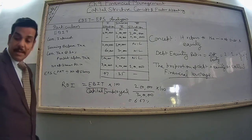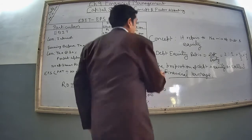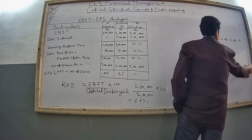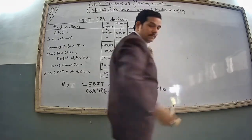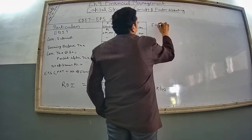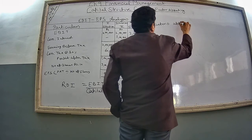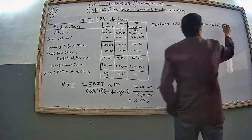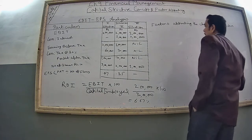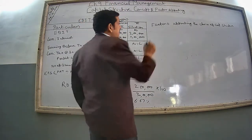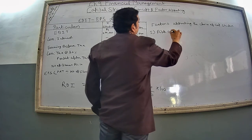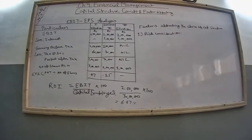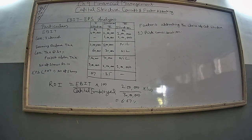Now we are studying the factors affecting the choice of capital structure. First is risk consideration. Risk consideration means use of more debt increases the financial risk of a business. Financial risk refers to the position when a company is unable to meet its fixed financial charges.